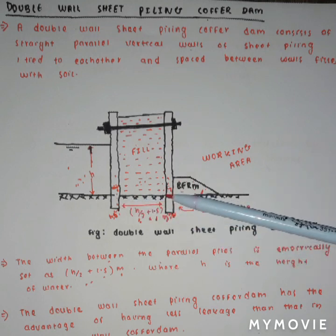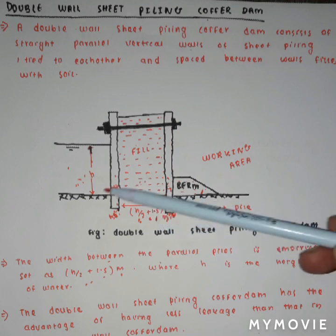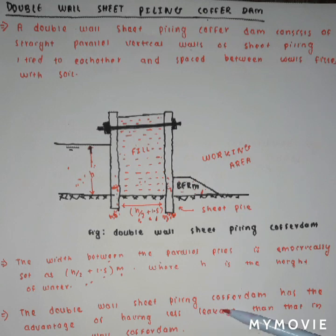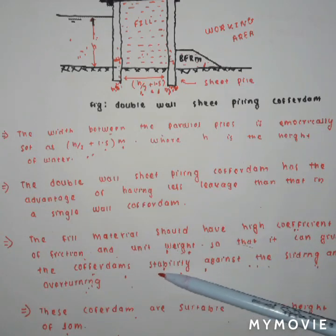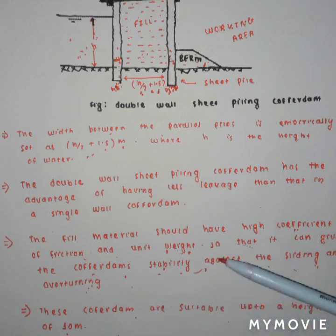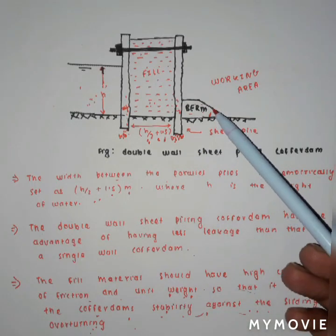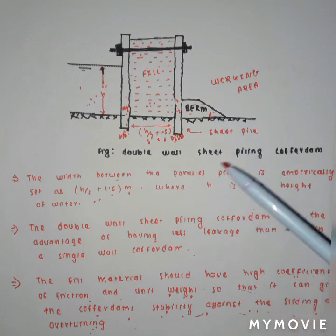In the double wall sheet piling cofferdam, two walls are constructed with a series of interconnected sheet piles. The space between these two parallel walls is empirically set as H/2 + 1.5 meters, where H is the height of the water in the water body. This double wall sheet piling cofferdam is much more advantageous than the single wall cofferdam because leakage is comparatively less. The space between the two parallel walls is filled with material having high unit weight and coefficient of friction to give stability against sliding and overturning. These types are especially preferred when the depth of water is up to 10 meters. A special structure called a berm is used to keep the phreatic line within the surface; the phreatic line is the top flow line which separates the saturated and unsaturated zones.